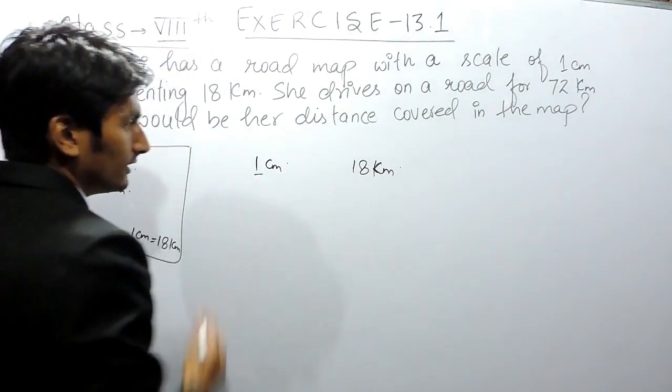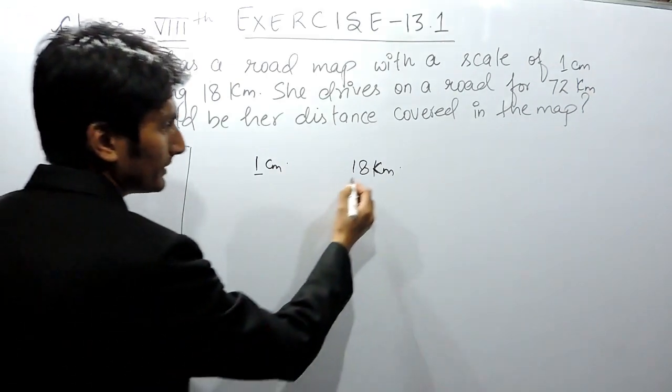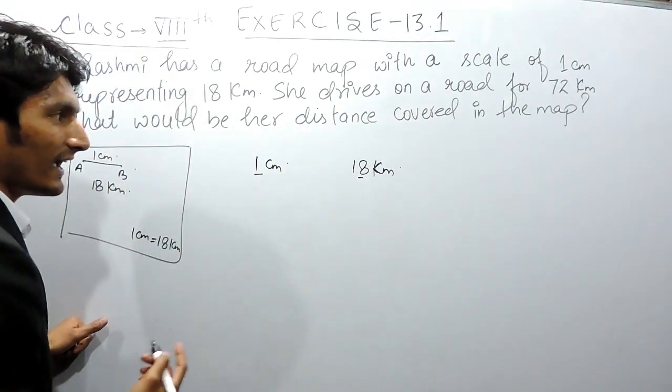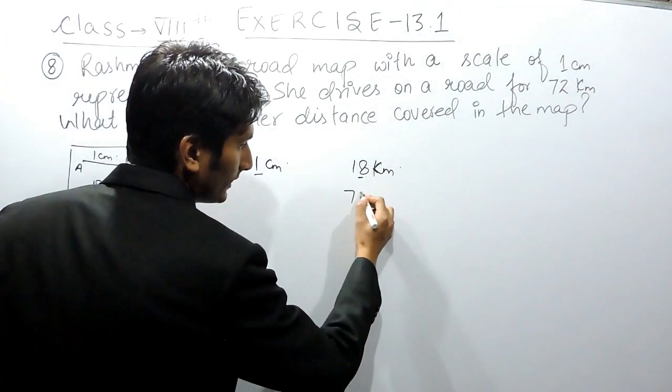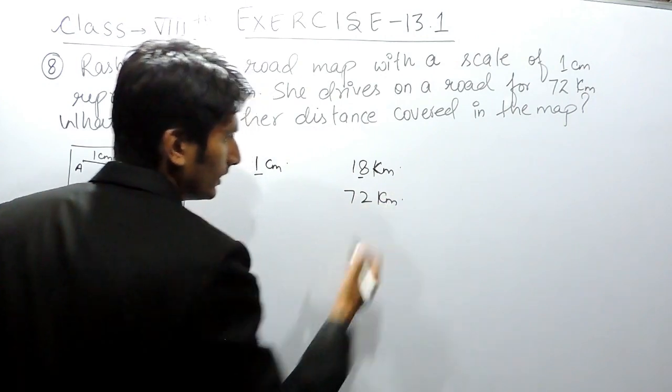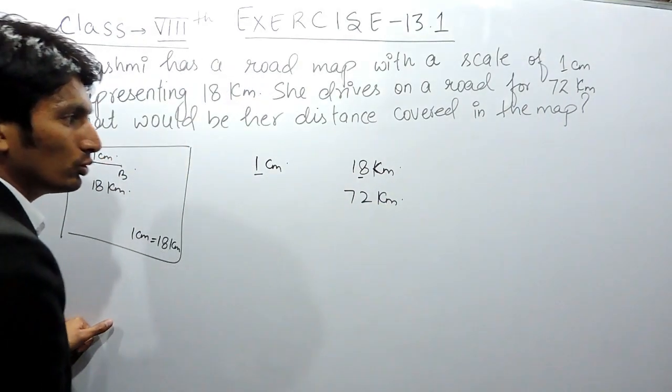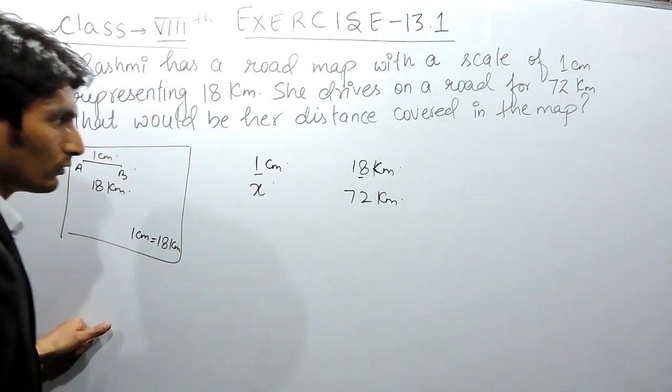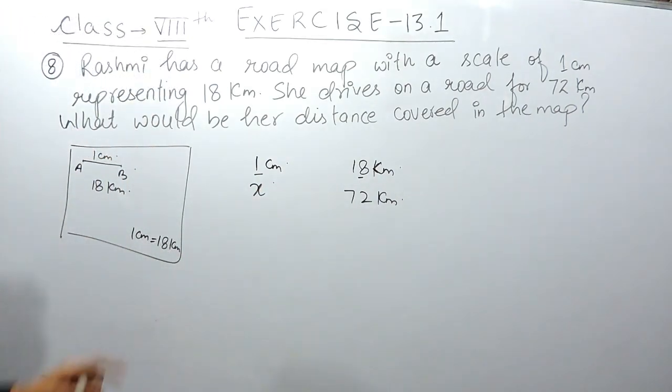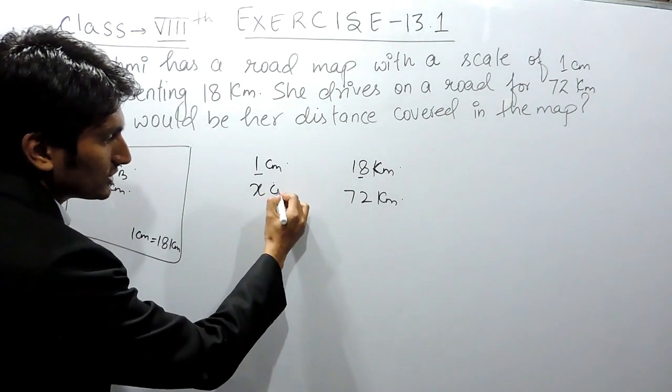When 1 centimeter on map is equal to 18 kilometers on actual ground, you have to find, if on actual it is 72 kilometers, so on this map the distance will be...